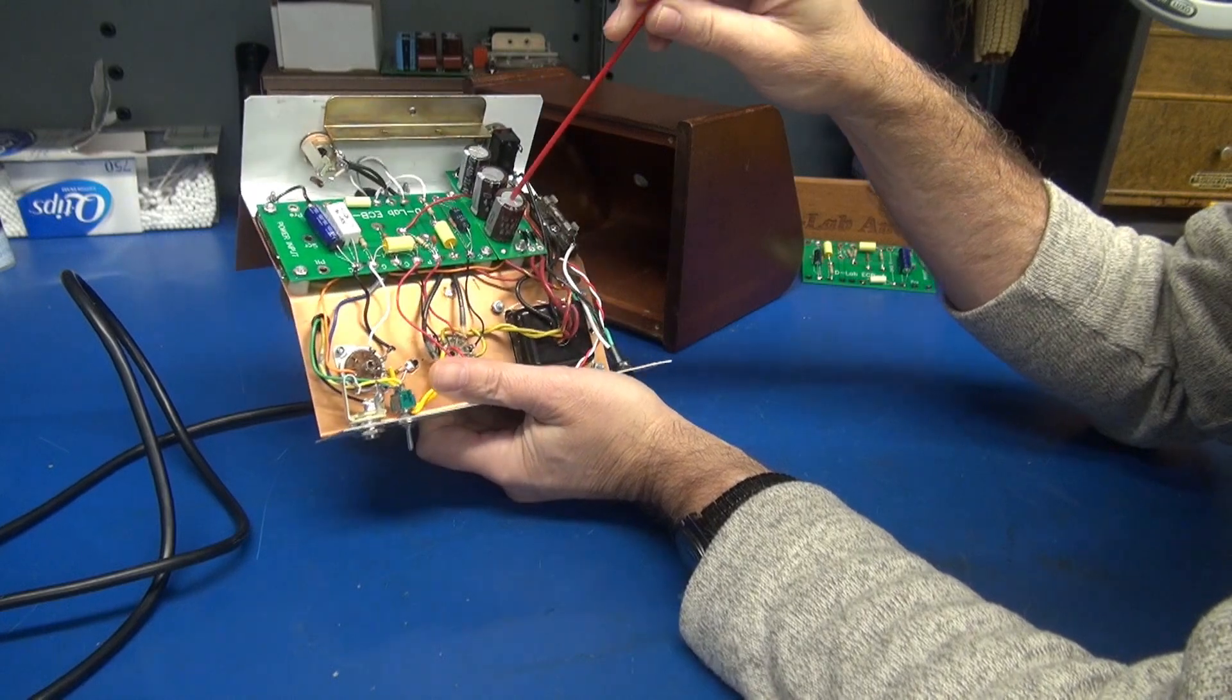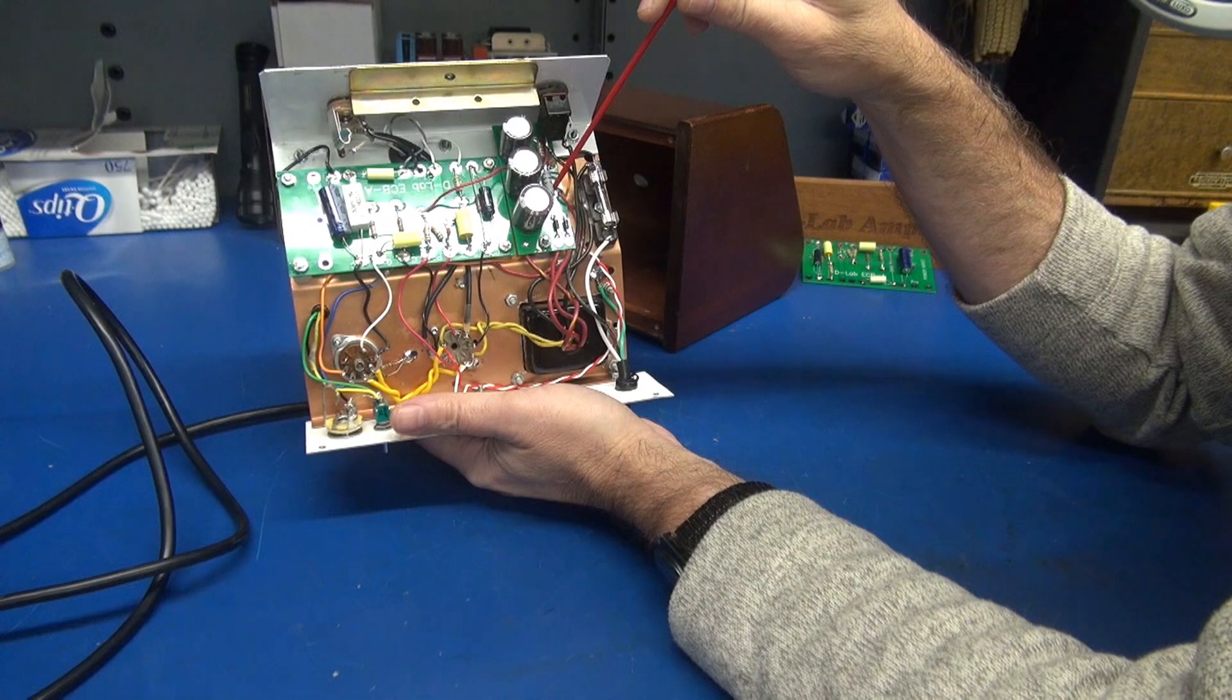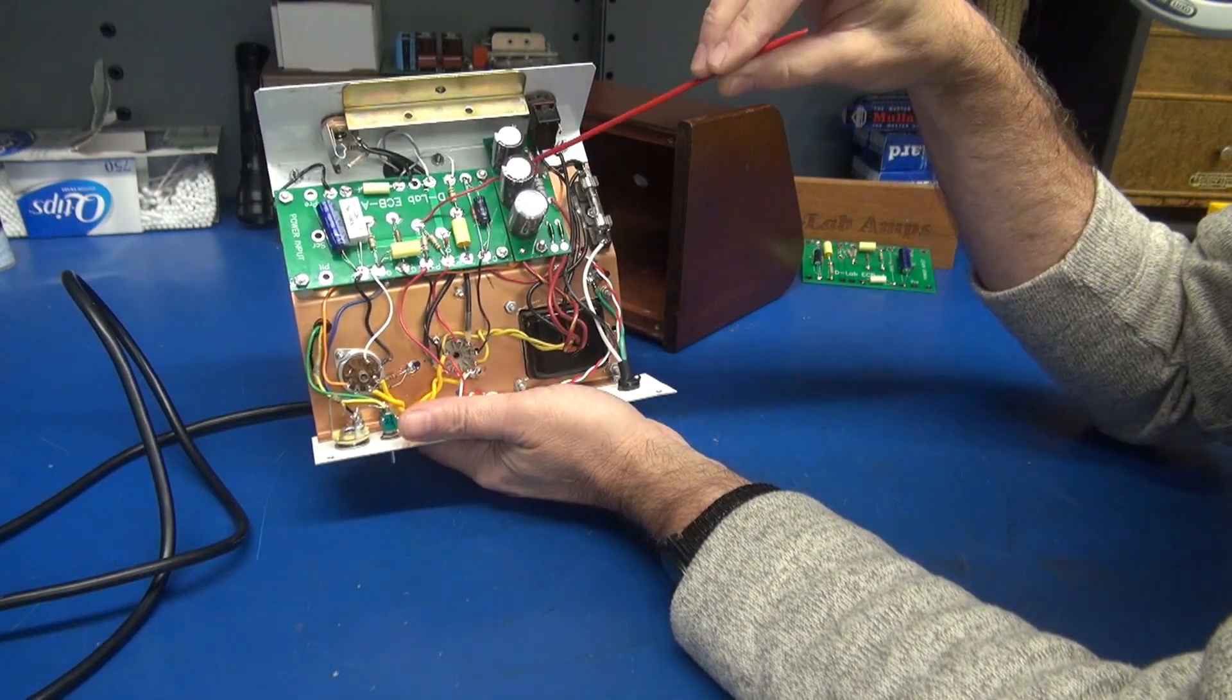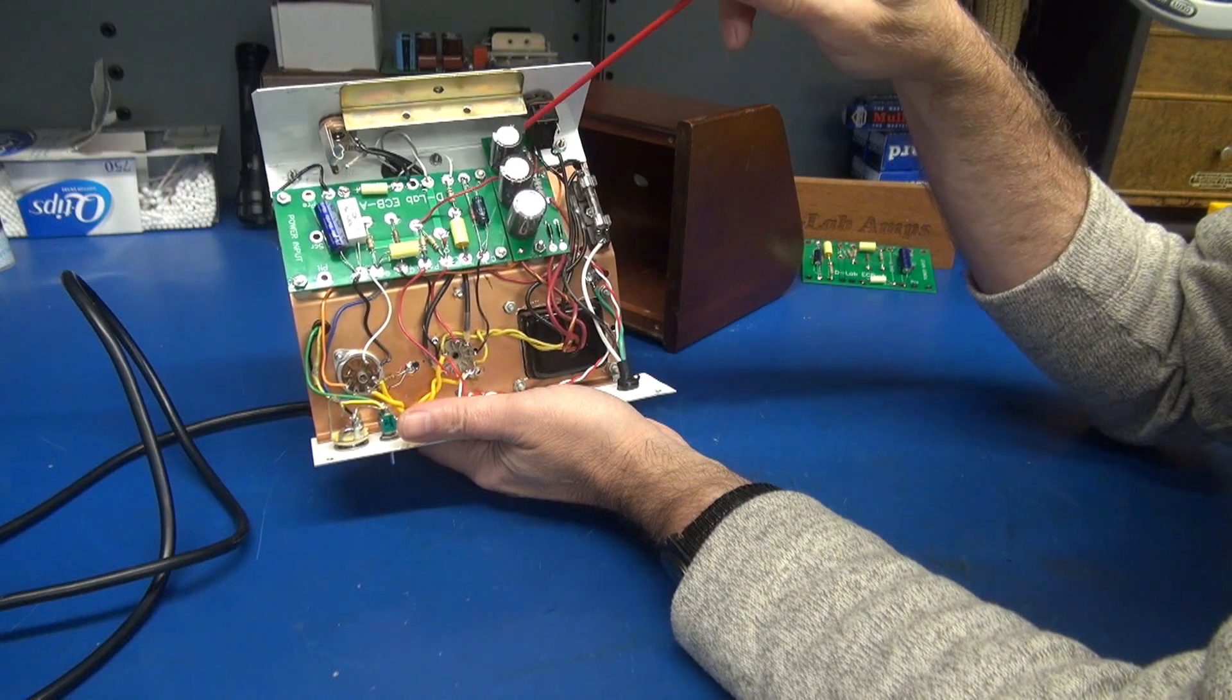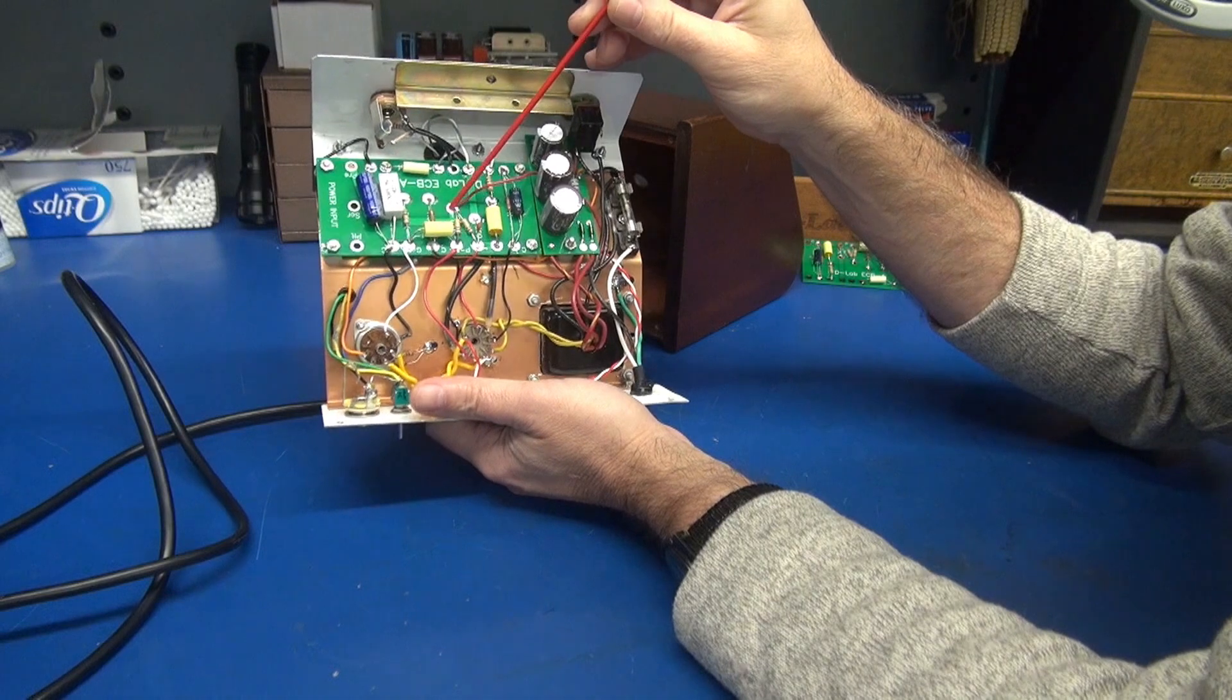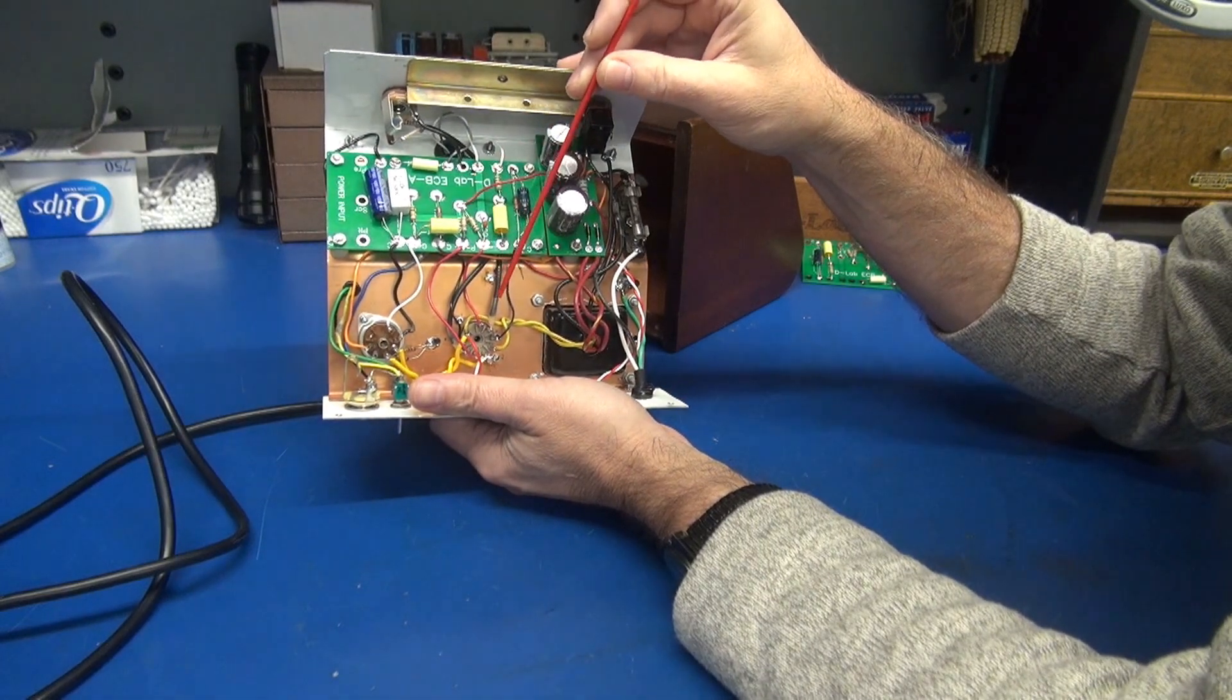In this case, my first cap is a 68 microfarad. Then we go through the screen resistor to a 47 microfarad, and then there's a 10K resistor tucked up there. We've got a little 22. And there's my high voltage feed going over simply to power the plates of the 12AX7.